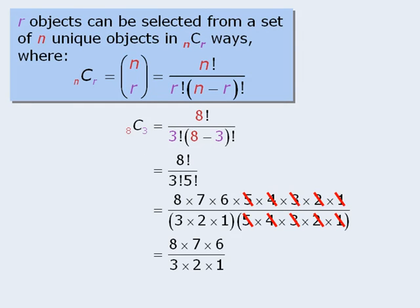Now here comes a very important observation. Notice that the numerator now consists of the first three terms of 8 factorial, and the denominator is 3 factorial. So it seems that the number 3 plays an important role in this calculation.